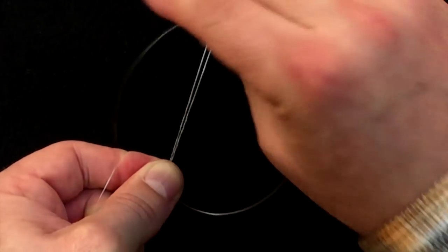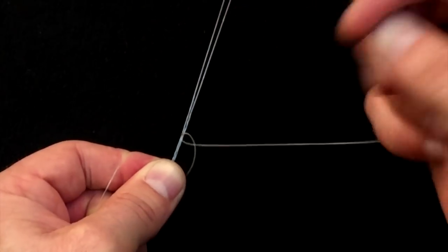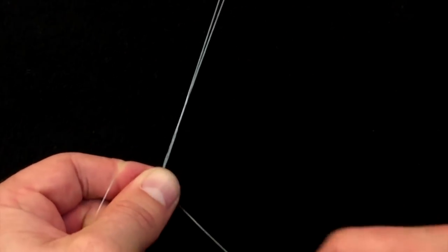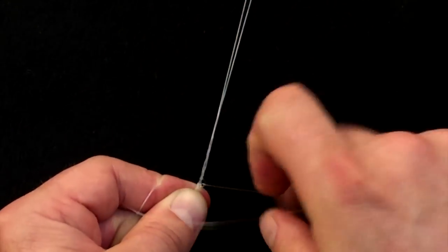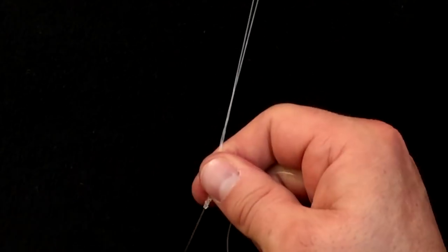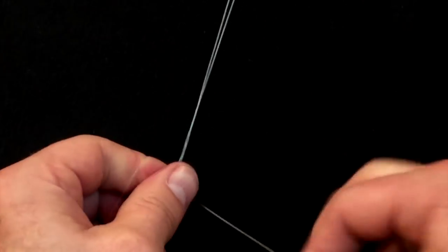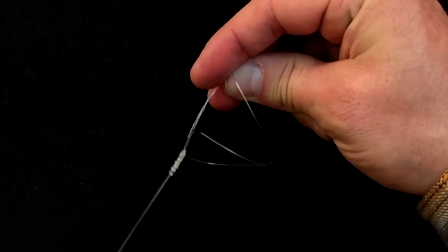Then I'm going to take the tag end around both legs and secure it. I'm going to do this two more times, a total of three half hitches, and then I'm going to go back in and I'm going to do four turns.